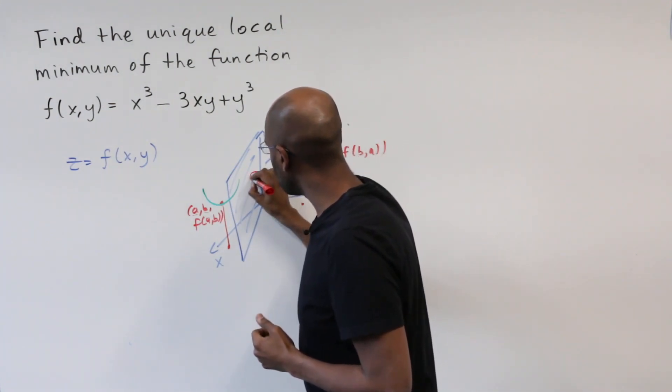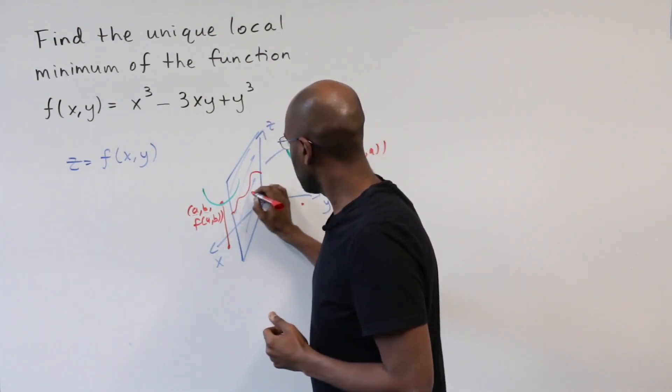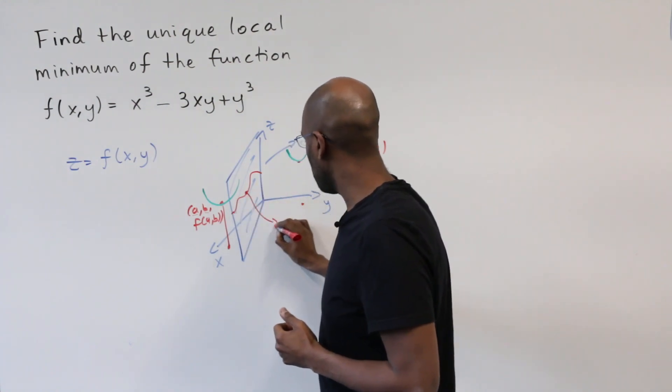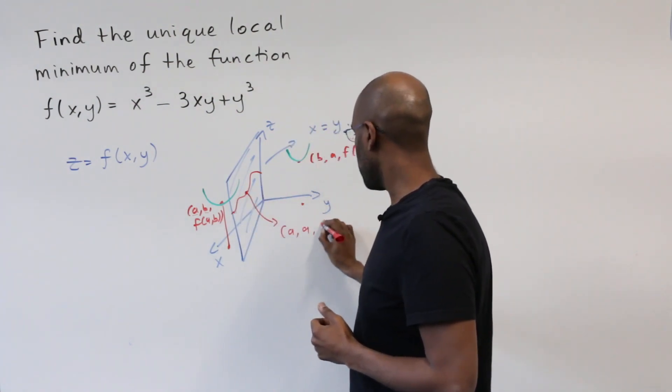And that's going to be a one dimensional thing. And our points here in general will look like a, a, f of a, a.